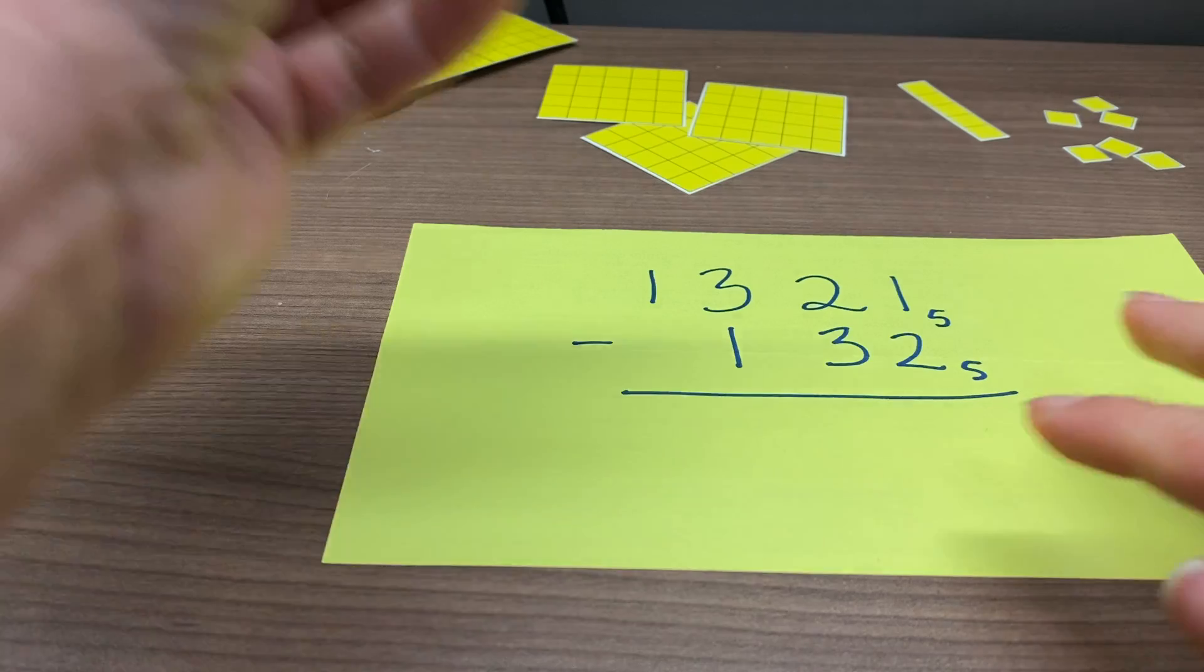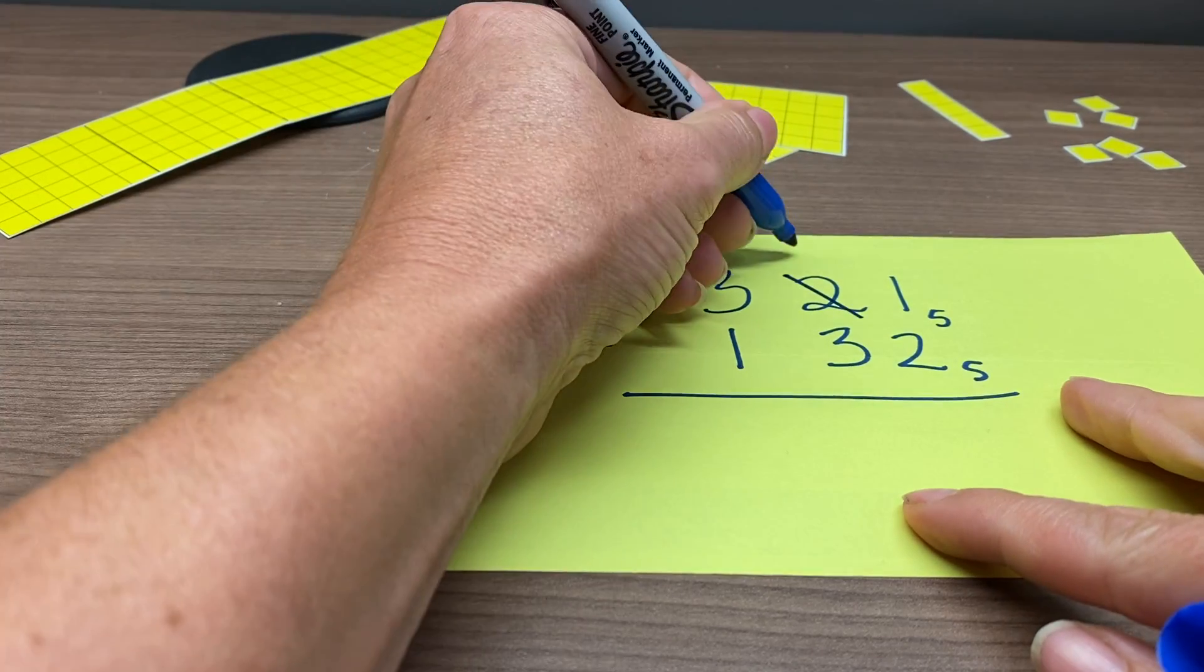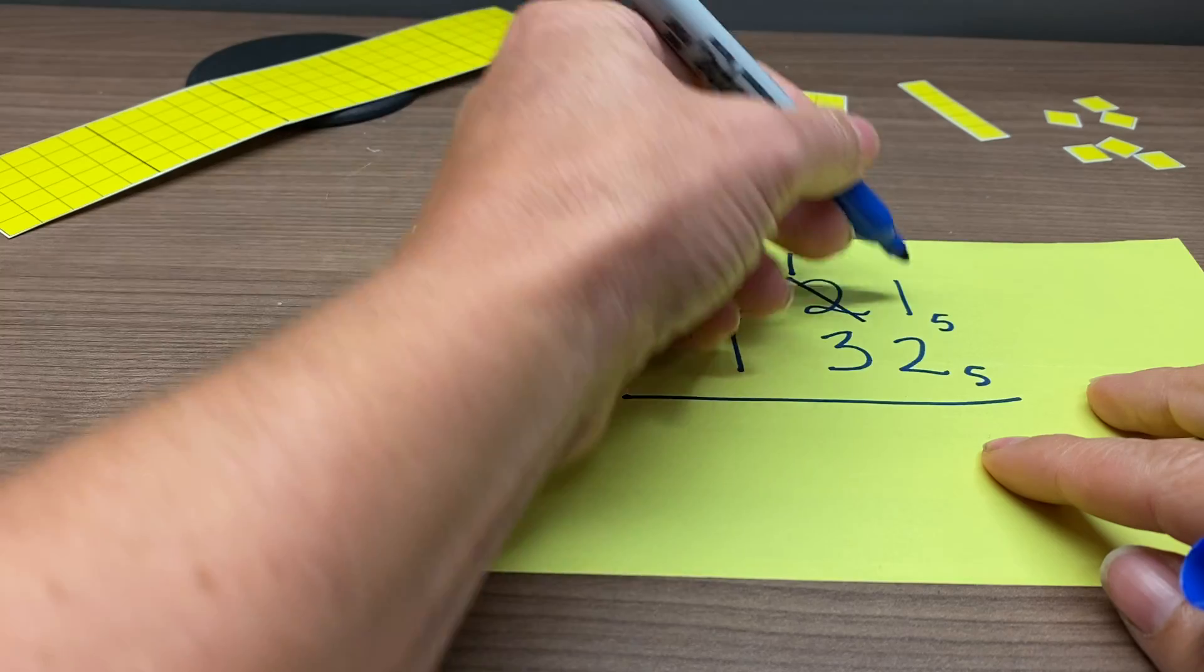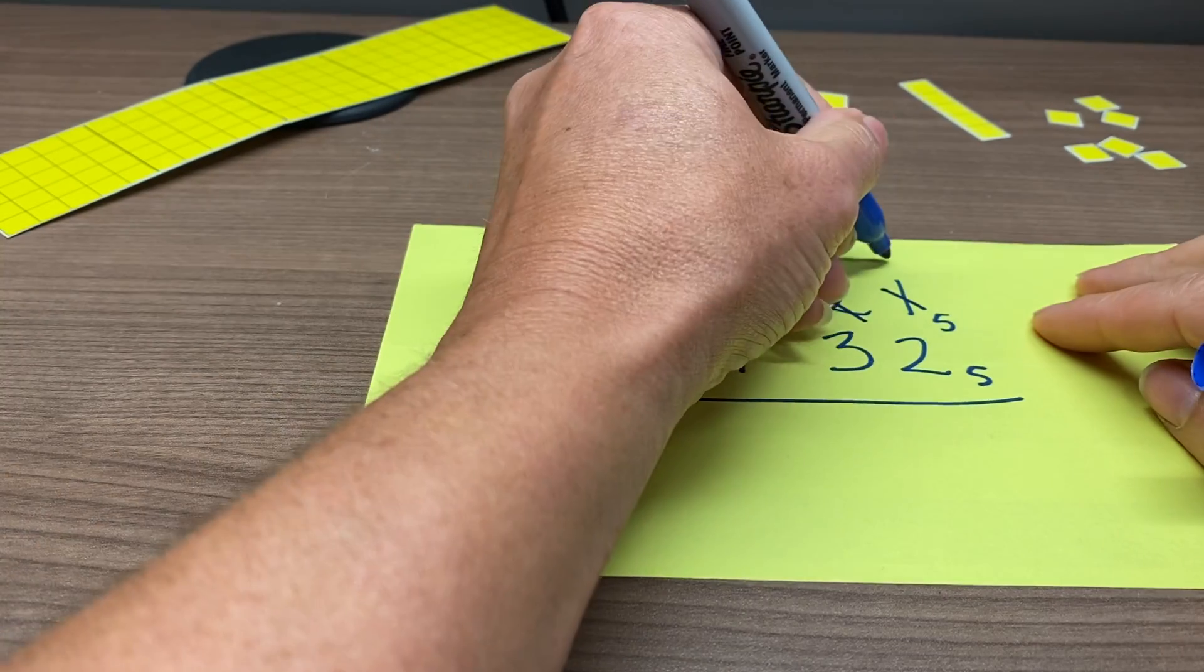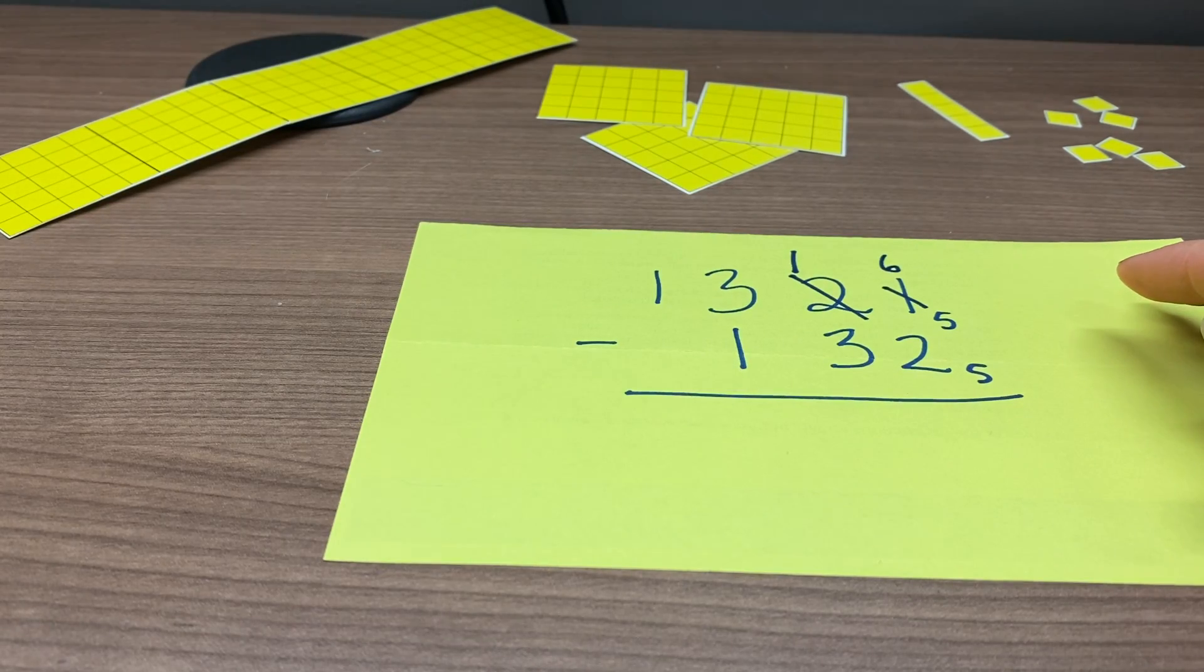All right, so let's record that. What we did just now, we took 1 of the strips of 5, so now there is 1 remaining, and we changed that 1 strip of 5 in for 5 singles, so now we have 6 singles over here, where we only had 1 before.